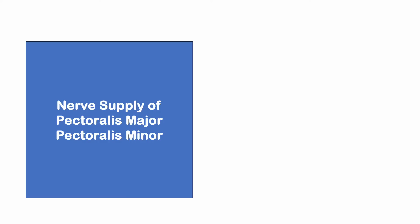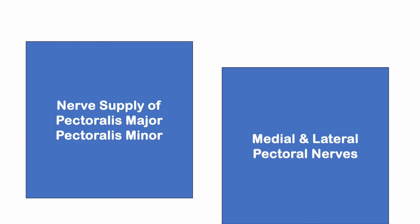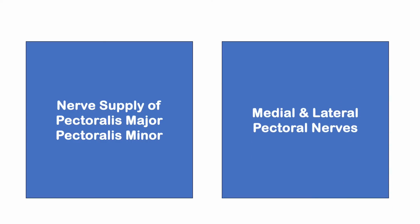Let's see the nerve supply of pectoralis major and pectoralis minor. The nerve supply of pectoral muscles is the medial and lateral pectoral nerves. Both medial and lateral pectoral nerves supply pectoralis major and pectoralis minor.